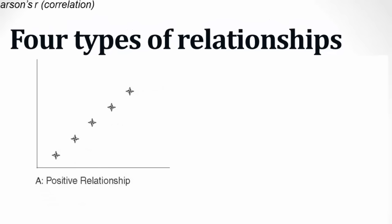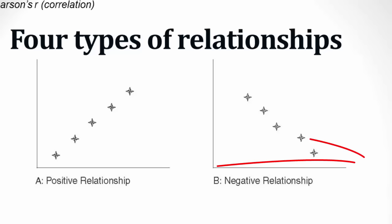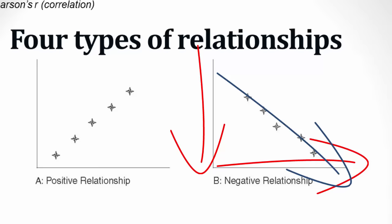A negative relationship is the opposite: the more hours spent studying for an exam, the worse the score. Or, as a person's age increases, their agility level decreases.